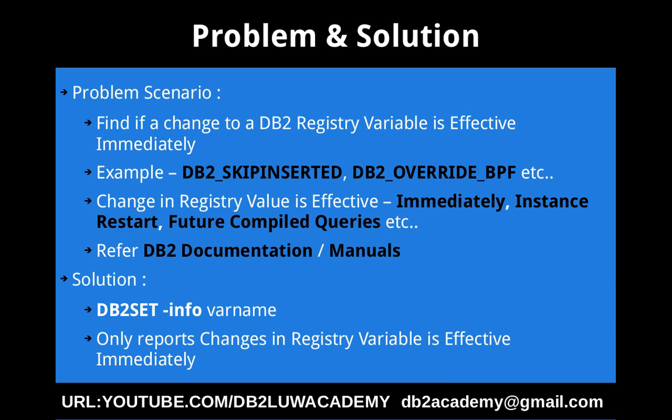To get this information, since there are a lot of registry variables and each has a specific way of dealing with things, we can refer to the DB2 documentation — the Knowledge Center available over the internet, manuals, and PDF documentations. The other solution I am suggesting is to use the db2set command itself with the option -info and specify the variable name.